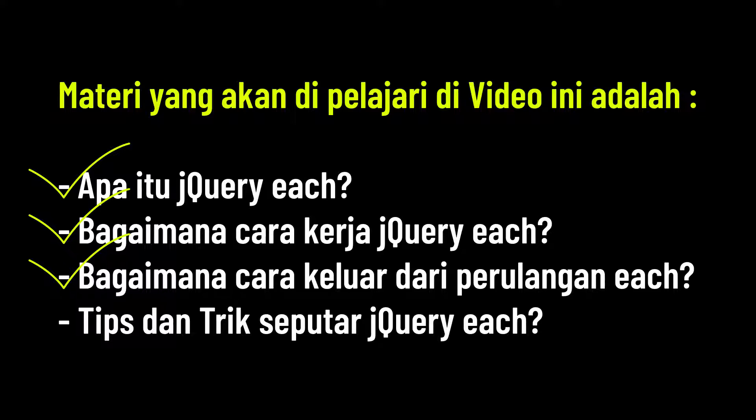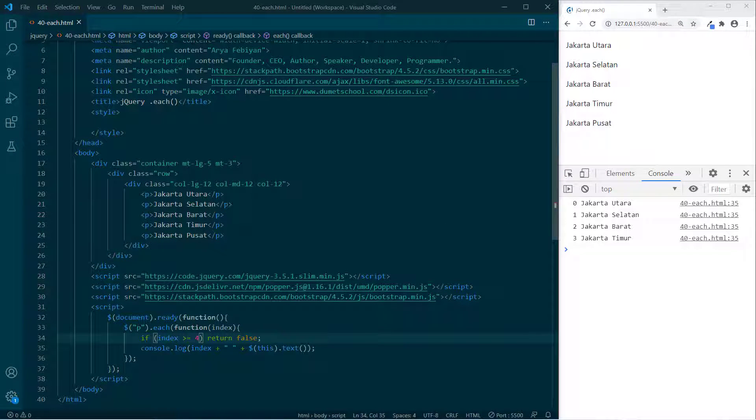Bagian terakhir adalah tips dan trik seputar jQuery each. Kita akan coba studi kasus sederhana untuk kalian bisa mengerjakan praktikum ke-47. Kita masuk ke tips dan trik — di sini kita akan membuat sebuah user interface menggunakan UL LI, rapih sekalian menggunakan Bootstrap.